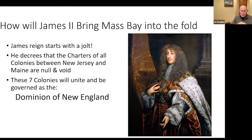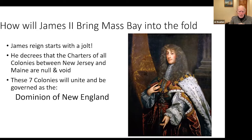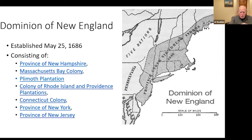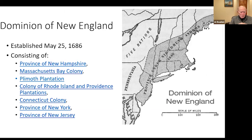His reign starts with a jolt: he decrees that all the charters of all the colonies between New Jersey and Maine are null and void. He wants all seven colonies' charters and will unite them to be governed as one entity called the Dominion of New England — that's a key term for this presentation. It was officially established in May of 1686 and consisted of colonies up through Connecticut, including Plymouth Plantation, the colony of Rhode Island, and the Providence Plantation.